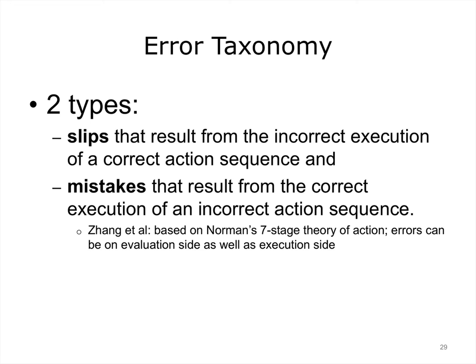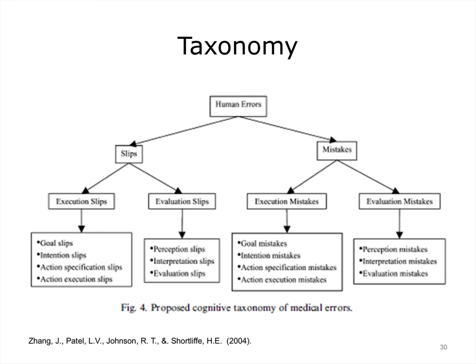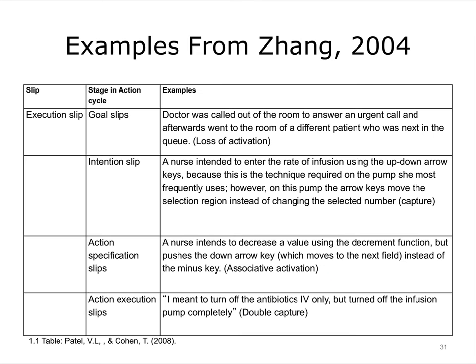There are two main types of errors: slips and mistakes. Slips are errors that result from the incorrect execution of a different key on the keyboard than the one intended. Mistakes are errors that result from the correct execution of an incorrect action sequence — for example, a person who does not know the correct spelling of a word will type the word incorrectly even if their typing is correct. Slips and mistakes can be further categorized according to whether they pertain to goals, intentions, action specifications, or action executions, as well as whether they involve perception, interpretation, or evaluation. The following slides give the complete taxonomy developed by Zhang et al., as well as healthcare examples of each type of error, and four slides show examples of errors classified according to the taxonomy.